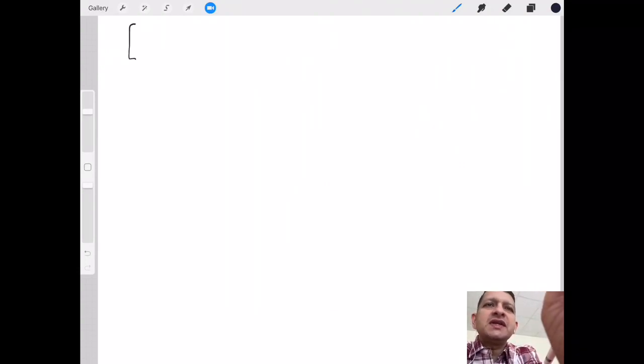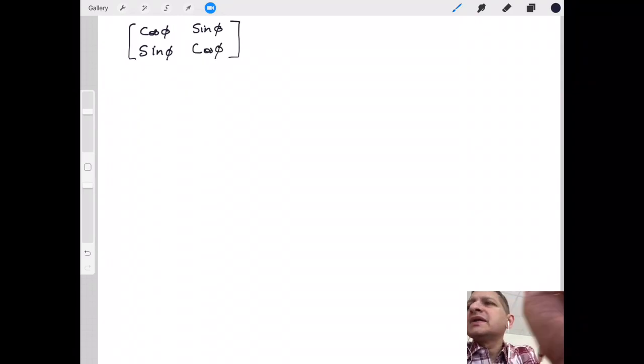This matrix which we are going to use is the matrix which we did in class: cos φ, -sin φ, sin φ, and cos φ. Now imagine we have a point at any location.